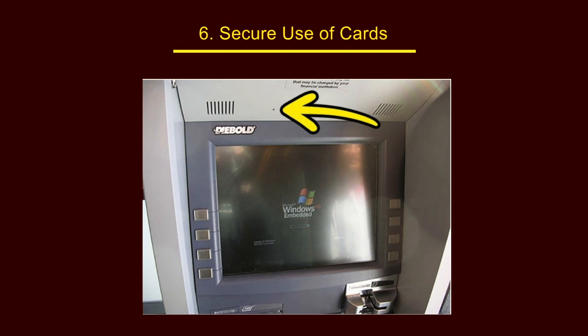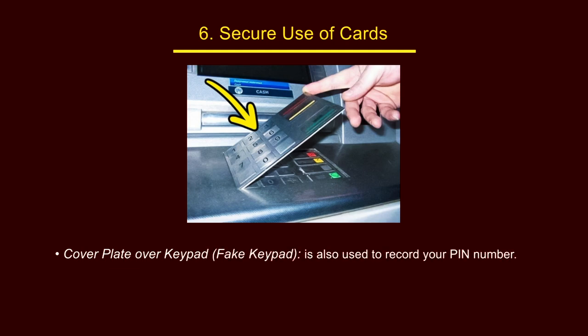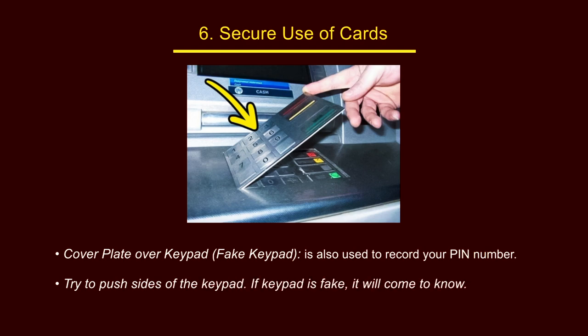The third device is a fake keypad or covered plate placed over the actual keypad. Whenever you press any button on the fake keypad, the key press is recorded in an electronic device attached to it. To check if the keypad is fake, try to push the upper corner or left corner of the keypad — if it is fake it will visibly move. Using this method you can detect a fake keypad or skimmer on the machine.